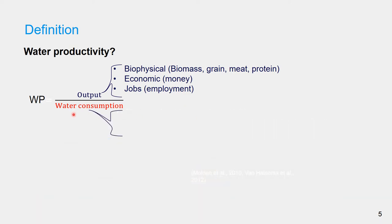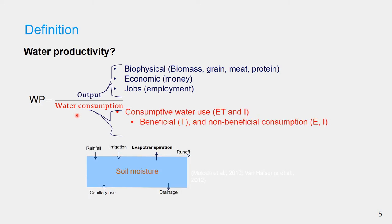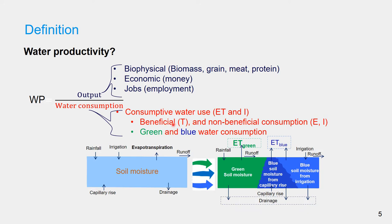Water consumption refers to the seasonal water use, which is the sum of transpiration plus evaporation of the soil water and interception from the start to the end of crop season. It consists of beneficial fraction, which is transpiration, and non-beneficial fraction, which is evaporation.